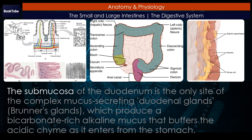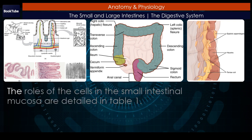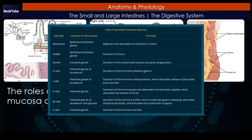The submucosa of the duodenum is the only site of the complex mucus-secreting duodenal glands (Brunner's glands), which produce a bicarbonate-rich alkaline mucus that buffers the acidic chyme as it enters from the stomach. The roles of the cells in the small intestinal mucosa are detailed in Table 1.